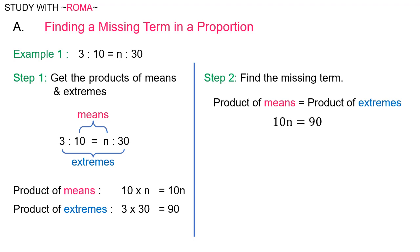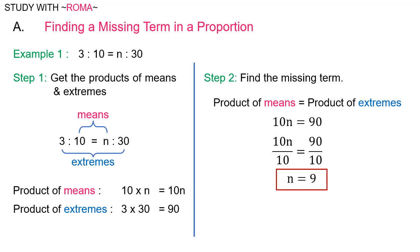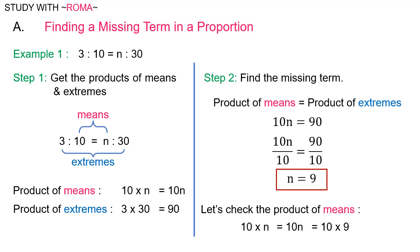Step 2: Find the missing term. Product of means equals product of extremes, so 10n is equal to 90. Divide both sides by 10: 10n divided by 10 is equal to n, and 90 divided by 10 is equal to 9. So n is equal to 9. Let's check: the product of means, 10 times 9, is equal to 90. Therefore, n is equal to 9.